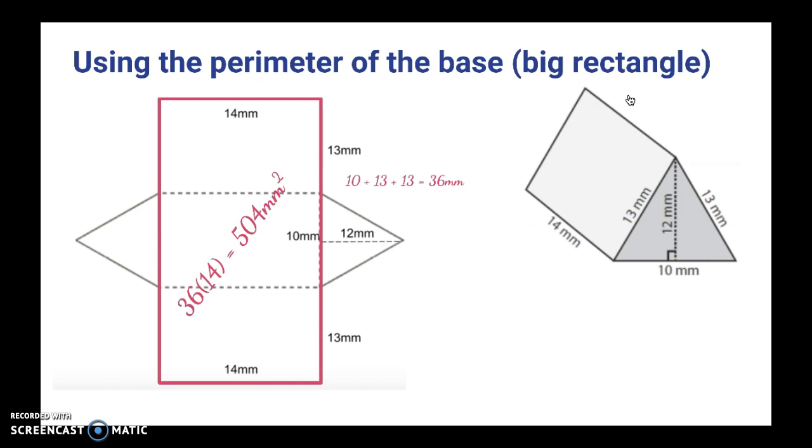And then again, we have the same two triangles that we already had, 60 square millimeters each. So to sum these, 504 plus 60 plus 60, we get 624 square millimeters. And that's awesome because it's the same exact area that we had last time. So we can have confidence that we're probably correct.